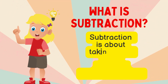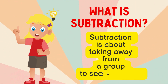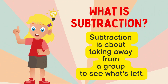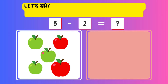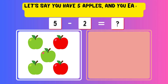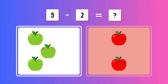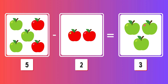What is subtraction? Subtraction is about taking away from a group to see what's left. Let's say you have five apples and you eat two. How many apples are left after eating? Five minus two equals three apples left.